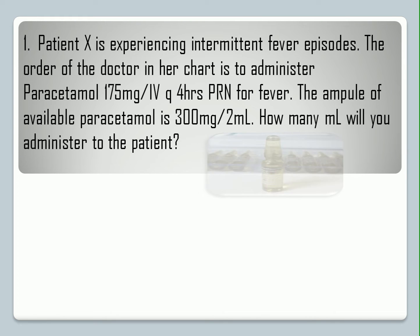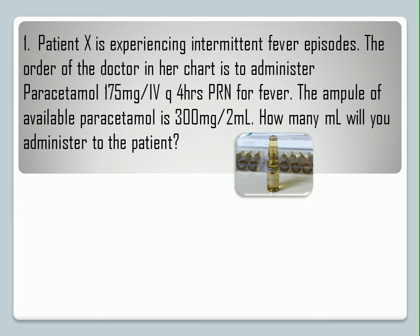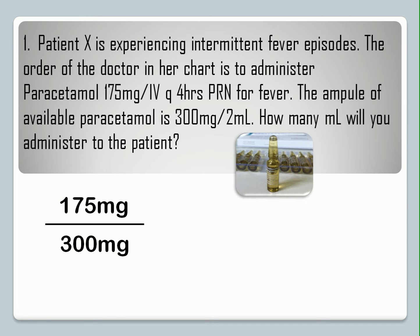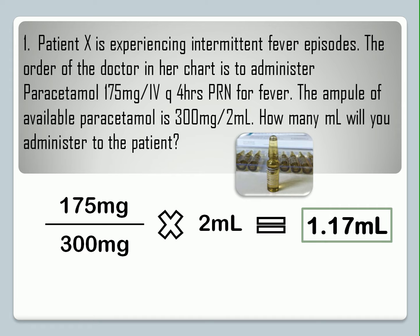Here is the first example. The patient is experiencing intermittent fever episodes. The doctor's order is to administer paracetamol 175 mg IV every 4 hours, PRN for fever. The available ampoule is 300 mg per 2 ml. How many ml will you administer? The doctor's order is 175 mg divided by the stock dose of 300 mg, multiplied by the volume of 2 ml. The answer is 1.17 ml.